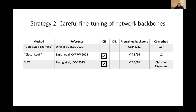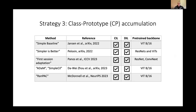The second strategy involves carefully fine-tuning the network backbone — a strategy that leads to catastrophic forgetting with non-pre-trained networks, but has been shown to work effectively when done carefully with a pre-trained model. By carefully, I mean using sufficiently low learning rates and, as shown in the SLCA method by Zhang et al., benefiting from different learning rates in the body versus the head. These approaches have needed to combine fine-tuning with a specific continual learning method such as Learning Without Forgetting or the classifier alignment method of Zhang et al.